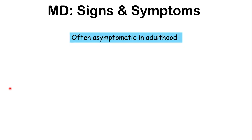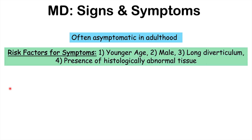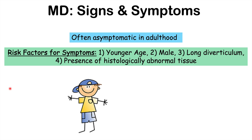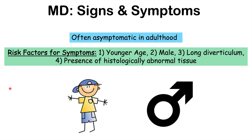Now let's talk about the signs and symptoms of Meckel's diverticulum. Patients in adulthood are often asymptomatic. In cases where symptoms occur, risk factors include younger age, being male, having a longer diverticulum — as the longer the diverticulum, the more likely a patient will have signs and symptoms — and the presence of histologically abnormal tissue, such as ectopic gastric mucosa.